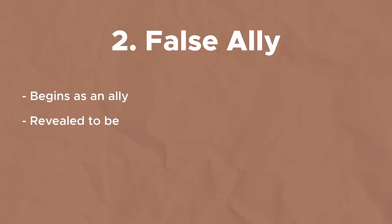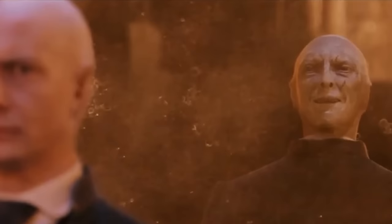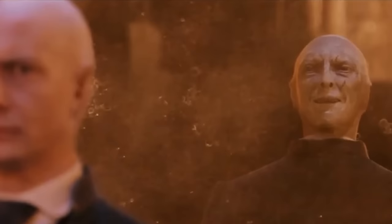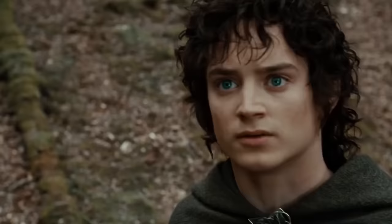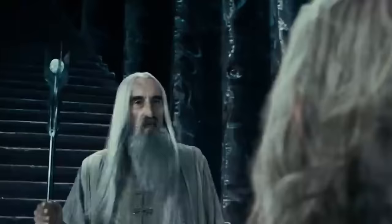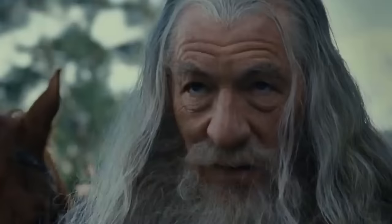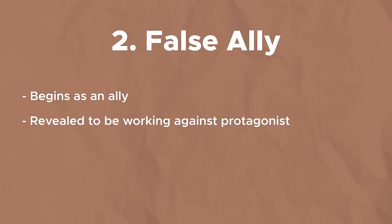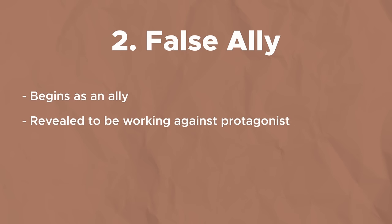The second antagonist archetype is the false ally. This is a character that initially begins as a friend to your main character, but over the course of the story there is some kind of betrayal or twist where we realize they're actually working against the protagonist. Examples include Professor Quirrell, who Harry initially thinks is a benevolent professor but is revealed to be working with Voldemort, Boromir who begins as part of the fellowship then tries to take the ring from Frodo, and Saruman, who is revealed to have been corrupted by Sauron's influence.